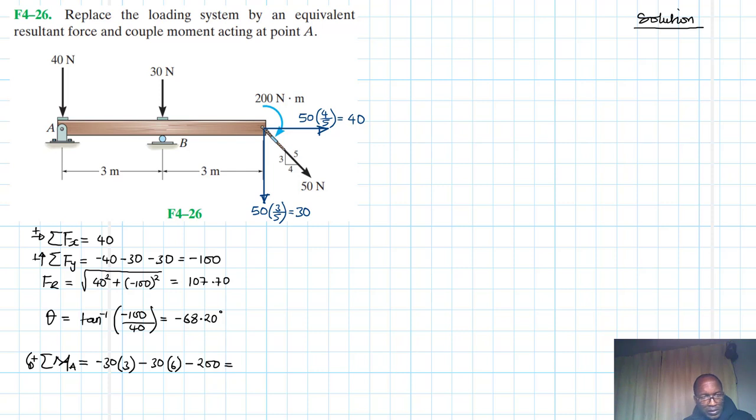So let's sum up these couple moments. We have minus 30 by 3, then minus 30 by 6, and minus 200. So this gives us minus 470. Minus 30 by 3, minus 30 by 6, minus 200 is 470.